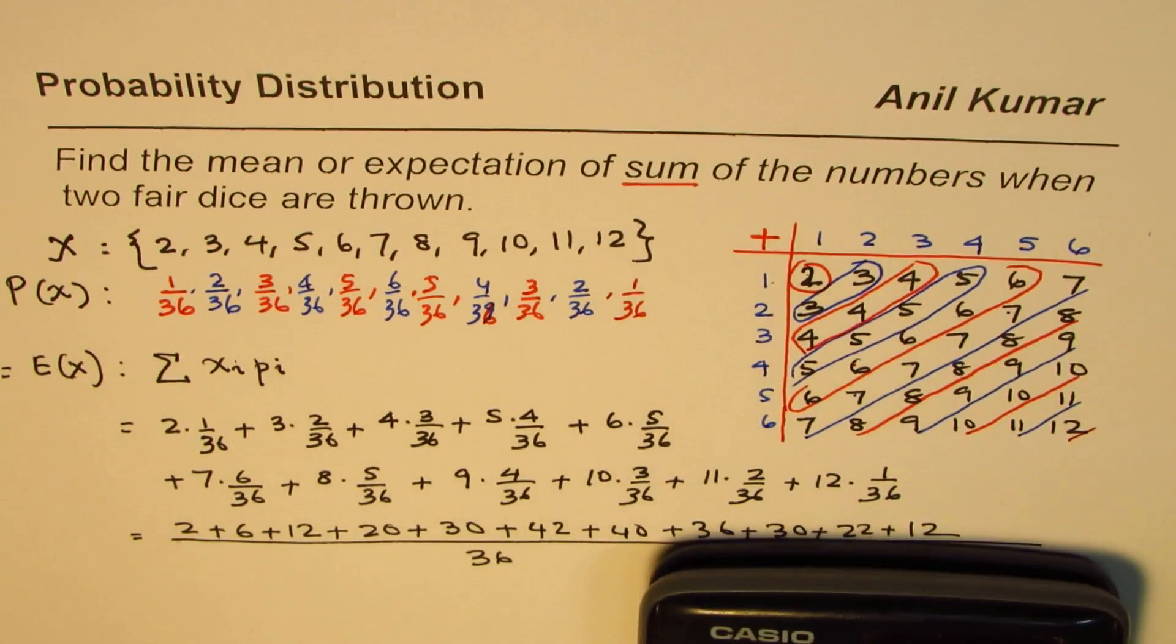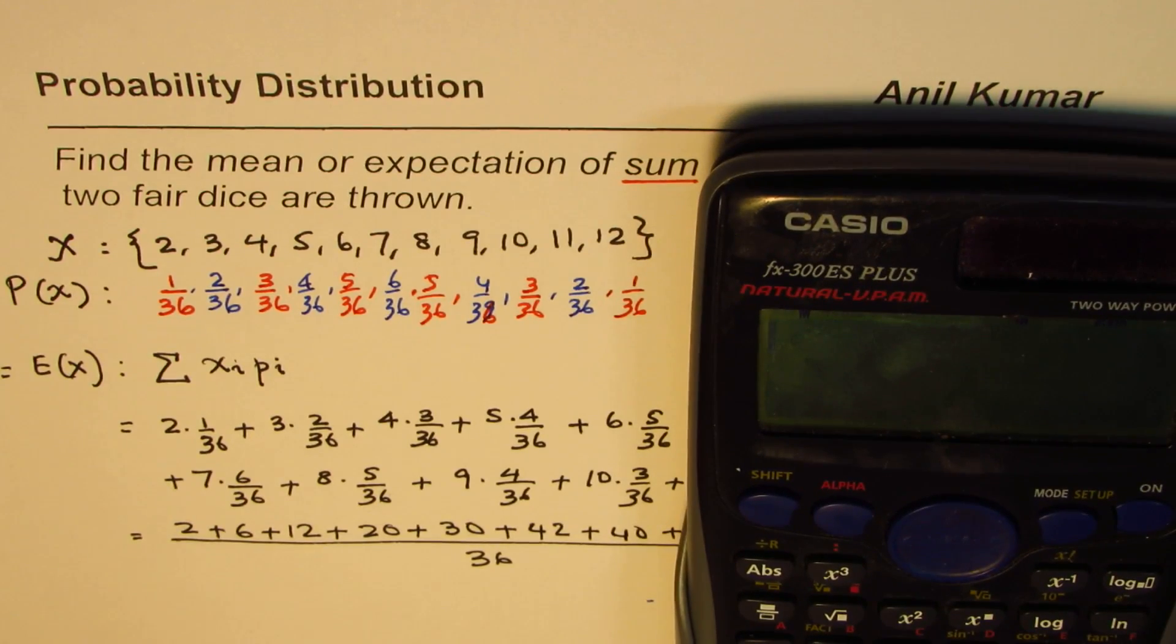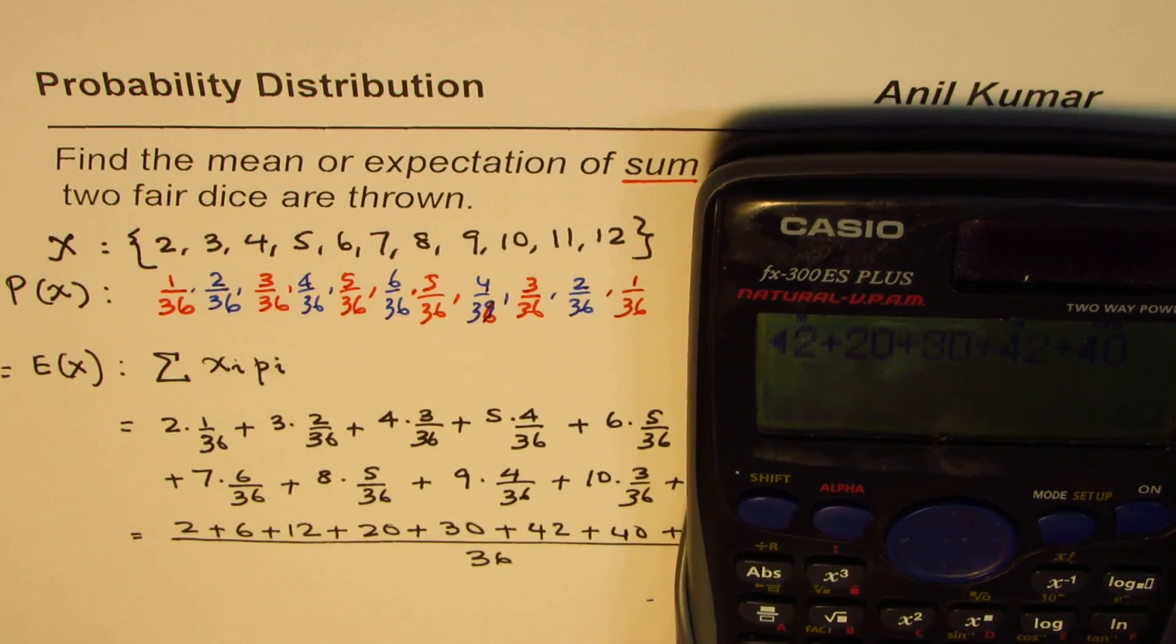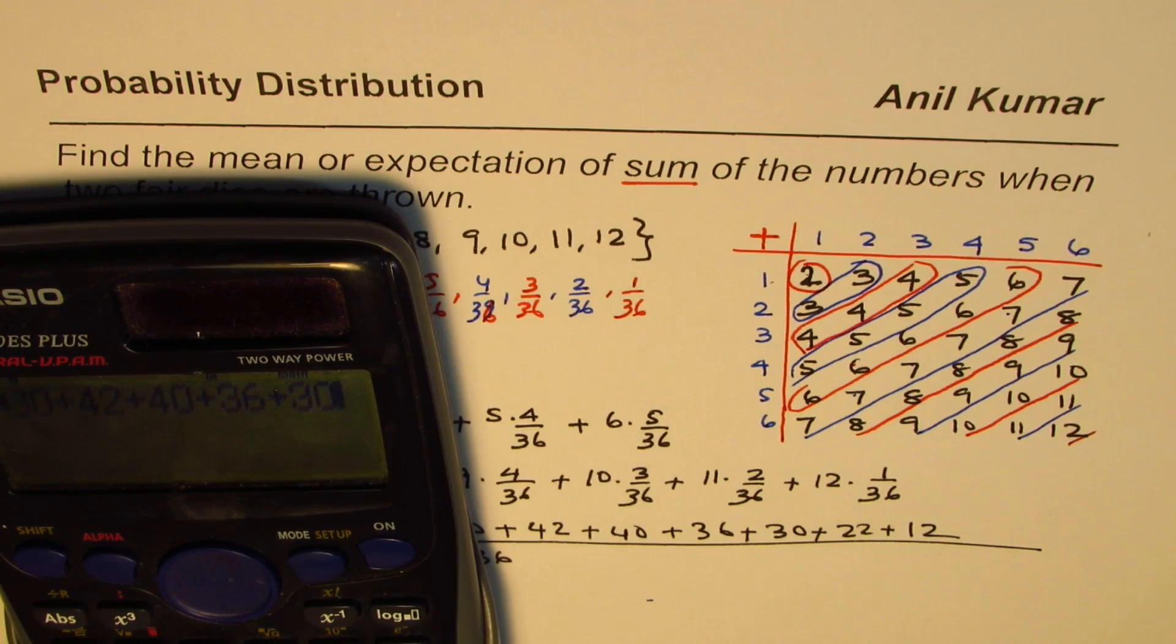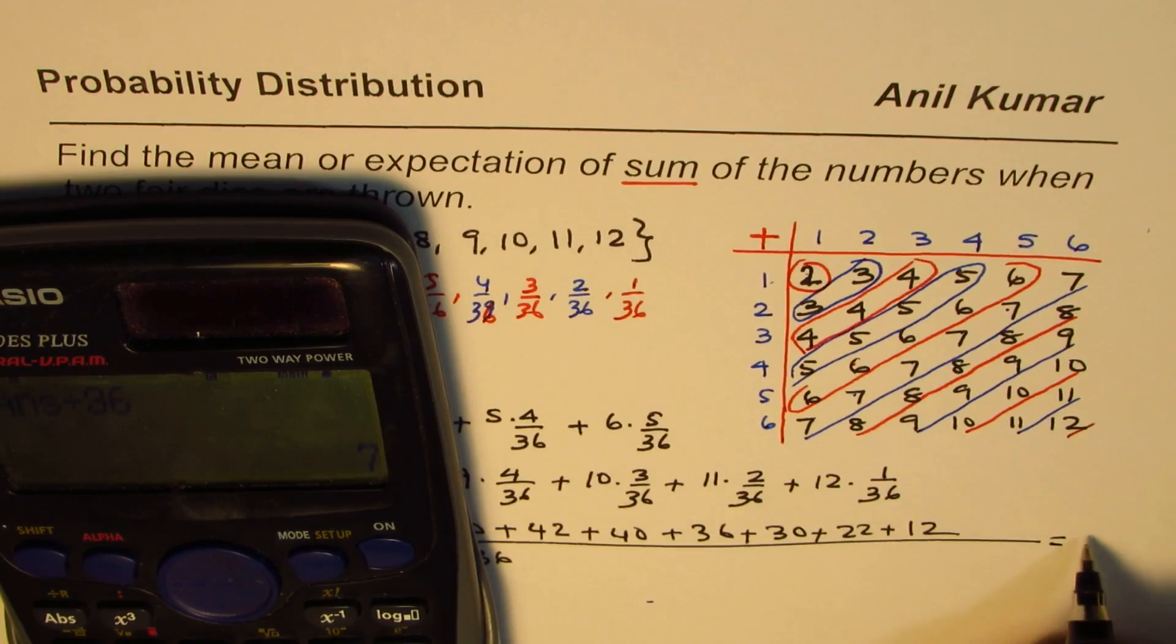Adding these up: 2 plus 6 plus 12 plus 20 plus 30 plus 42 plus 40 plus 36 plus 30 plus 22 plus 12 equals 252. Divide this by 36, and you get 7.